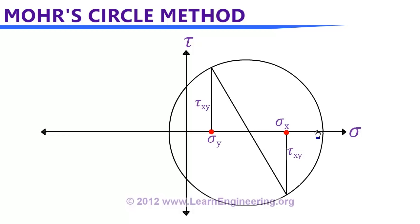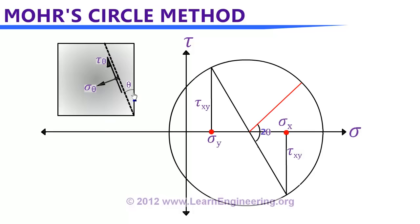A Mohr circle represents the complete stress state of a two-dimensional object. On the periphery of the circle you can locate shear stress and normal stress values. To find stress values at a given plane at angle theta, the angle in the Mohr circle is always doubled — it becomes 2-theta — starting from the diameter line. The peripheral values at that angle directly give you the normal stress and shear stress at that plane.